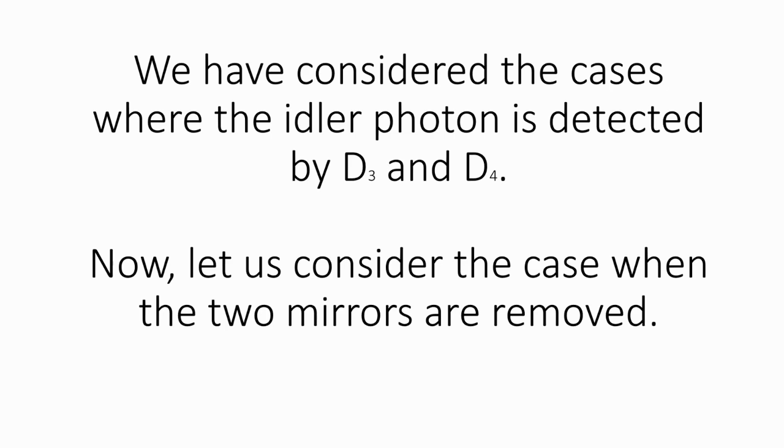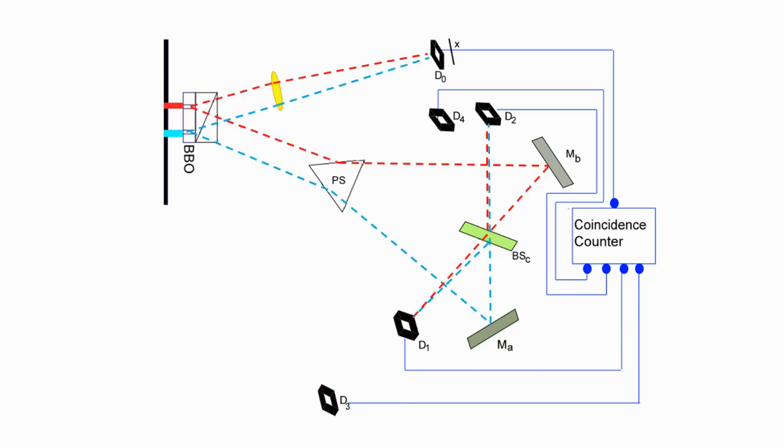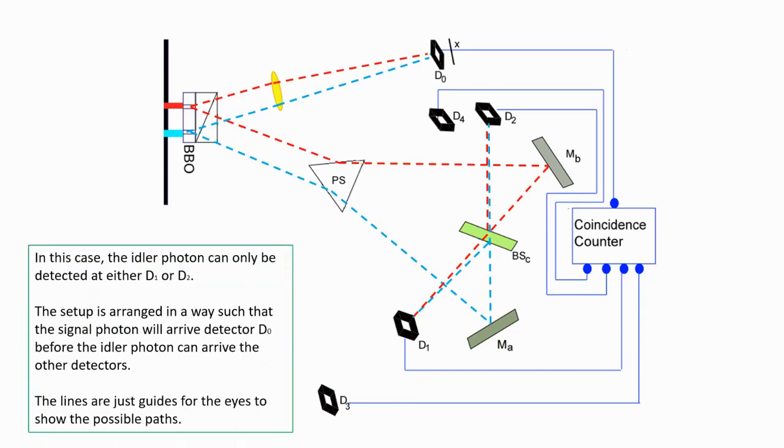Now, let us consider the case when the two mirrors are removed. In this case, the idler photon will be detected at either D1 or D2. Same as the previous cases, the setup is designed in a way such that the signal photon will reach detector D0 earlier than the idler photon reaches detectors D1 and D2.